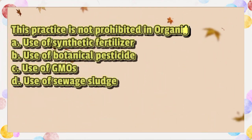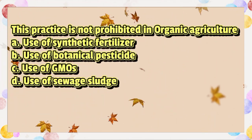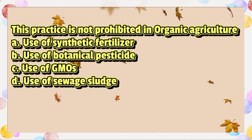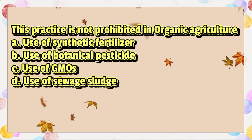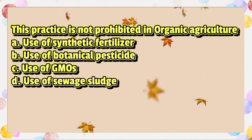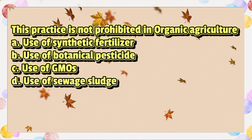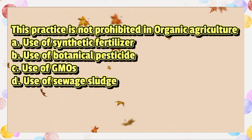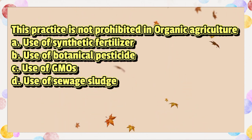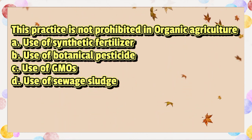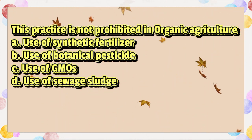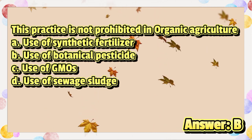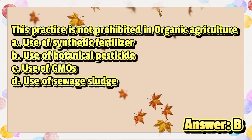This practice is not prohibited in organic agriculture. A. Use of synthetic fertilizer. B. Use of botanical pesticide. C. Use of GMOs. D. Use of sewage sludge. The answer is letter B.